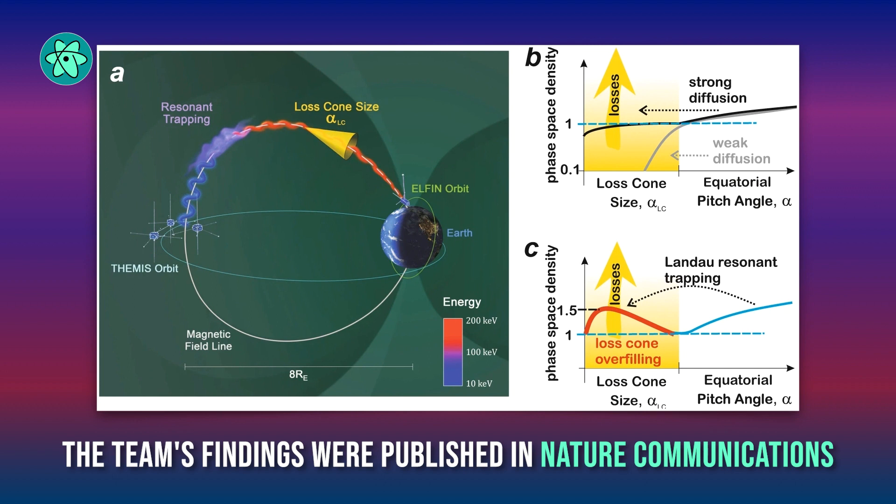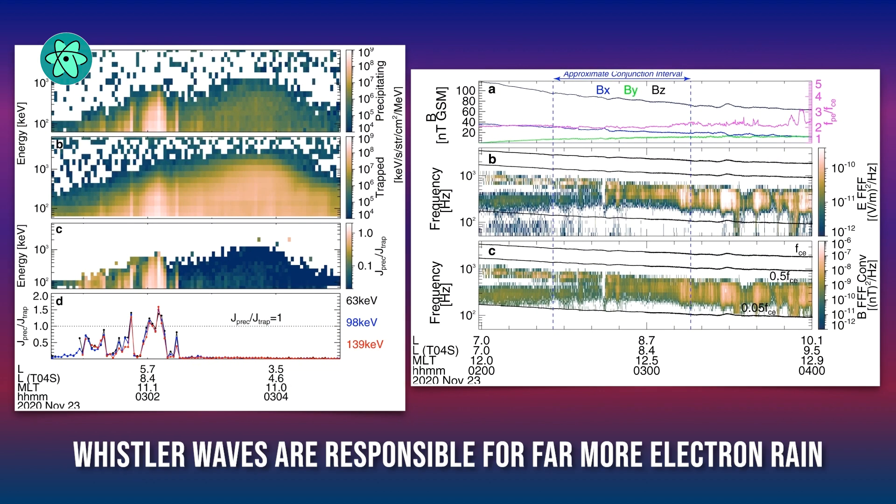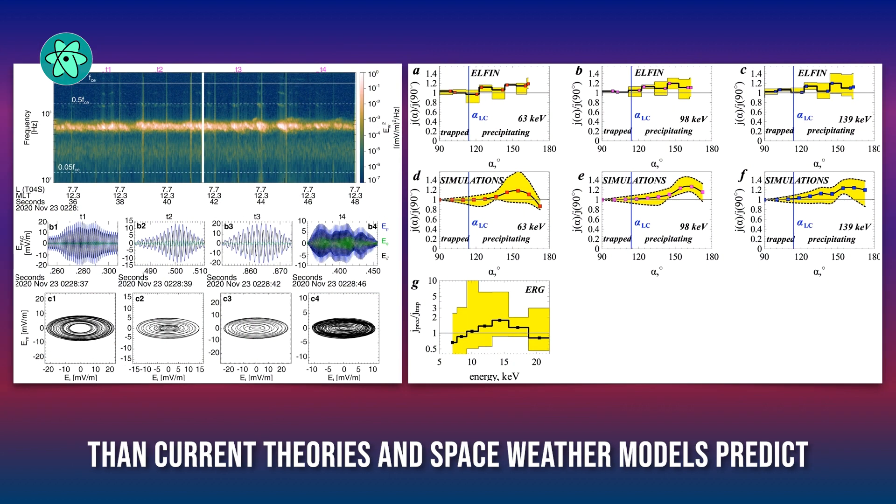The team's findings, published in Nature Communications, demonstrate that Whistler waves are responsible for far more electron rain than current theories in space weather models predict.